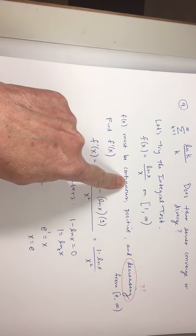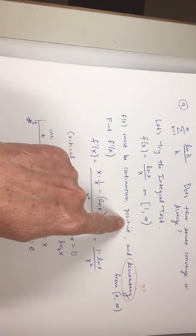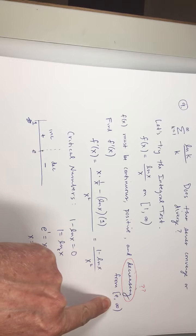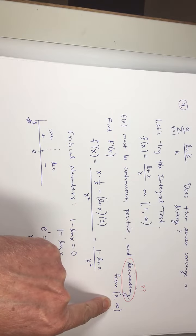So it's continuous. It is positive if we don't count x equal 1. It is decreasing if we look from e on out. So I can use the integral test.